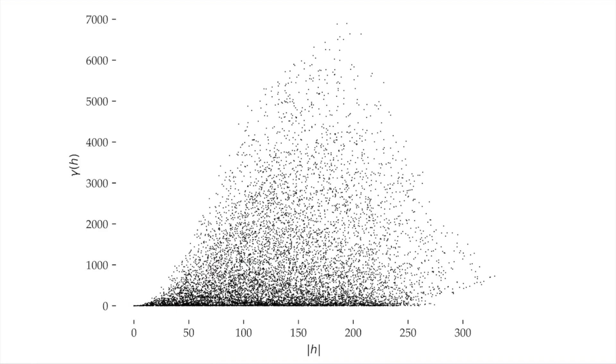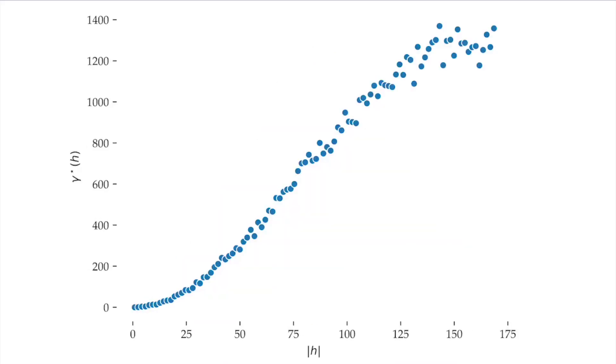However, the pattern in the variogram cloud is still not very clear, so the next step is to create bins that define distance intervals, and then we compute the average dissimilarity in each bin. We normally do this up to about half the size of the region covered by the dataset. The end result looks something like this, and is called the experimental variogram. In it, we can already see a clearer pattern for how the average dissimilarity between points increases, as the distance between them also grows.